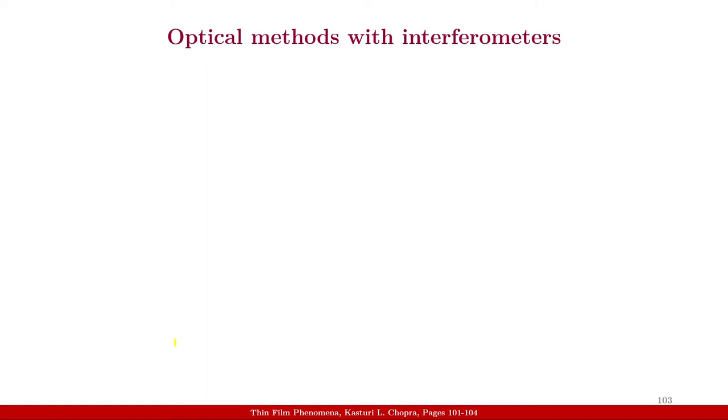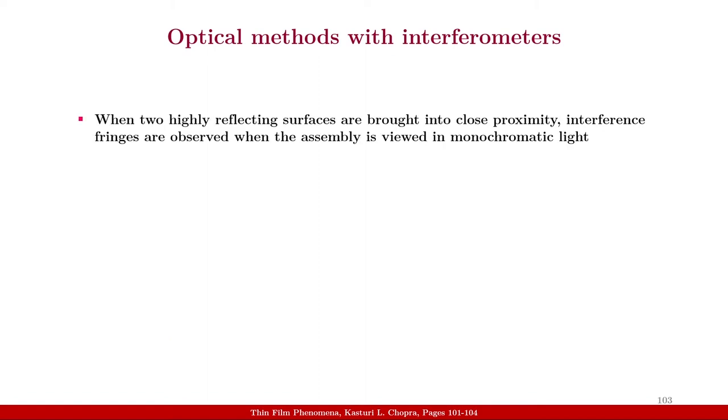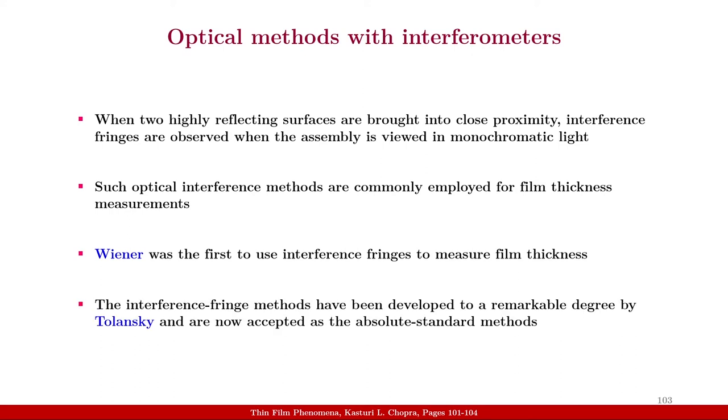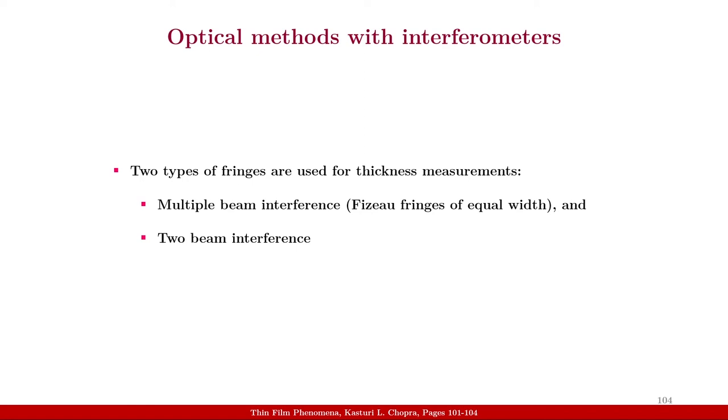The optical methods with interferometers. When two highly reflecting surfaces are brought into close proximity, interference fringes are observed when the assembly is viewed in monochromatic light. Such optical interference methods are commonly employed for film thickness measurements. Wiener was the first to use interference fringes to measure film thickness. The interference fringes have been developed to a remarkable degree by Tolansky and are now accepted as the absolute standard methods. Two types of fringes can be used for thickness measurements: the multiple beam interference which is also known as Fizeau fringes of equal width and two beam interference. We will now discuss about these two.